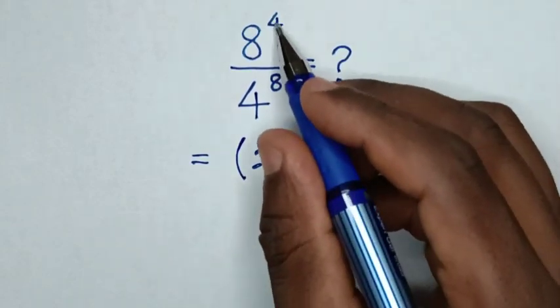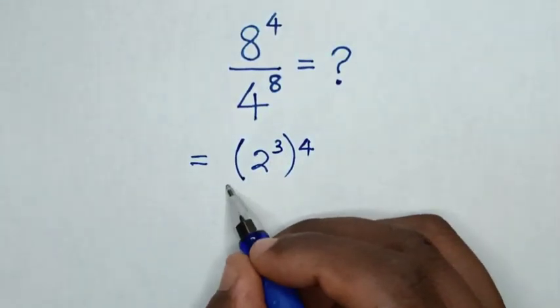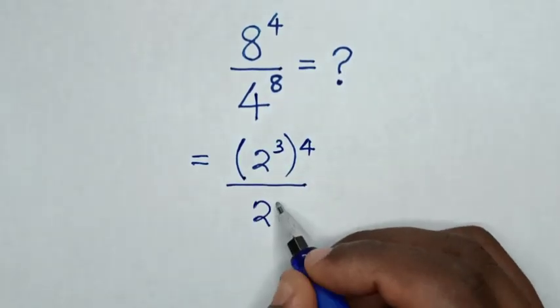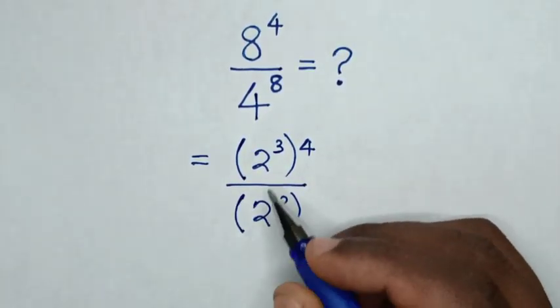Then bracket power of 4, over 4 is same as 2 power 2, then bracket power of 8.